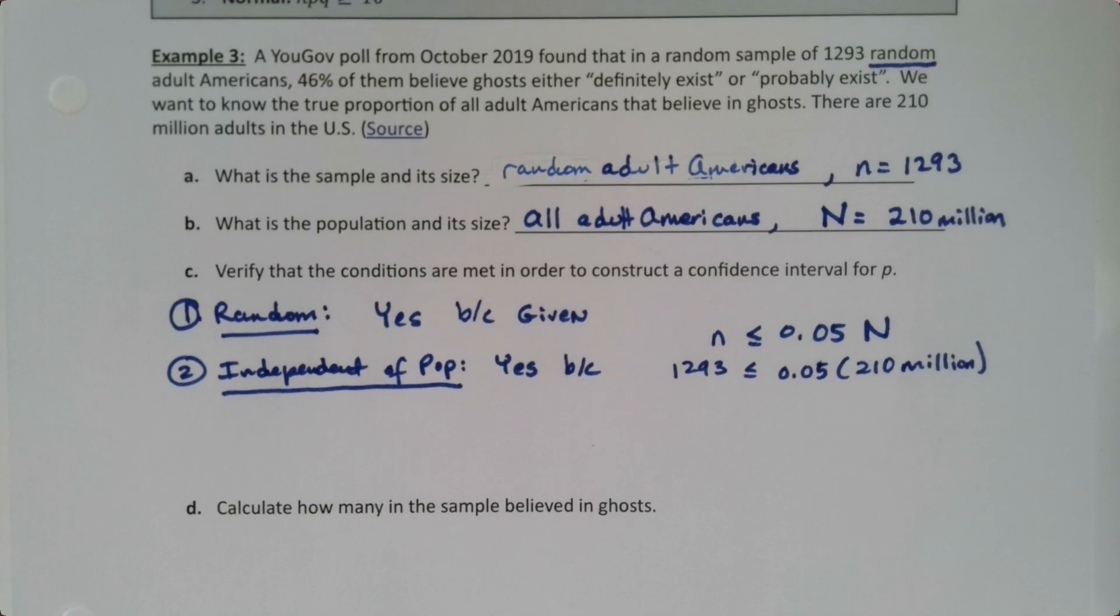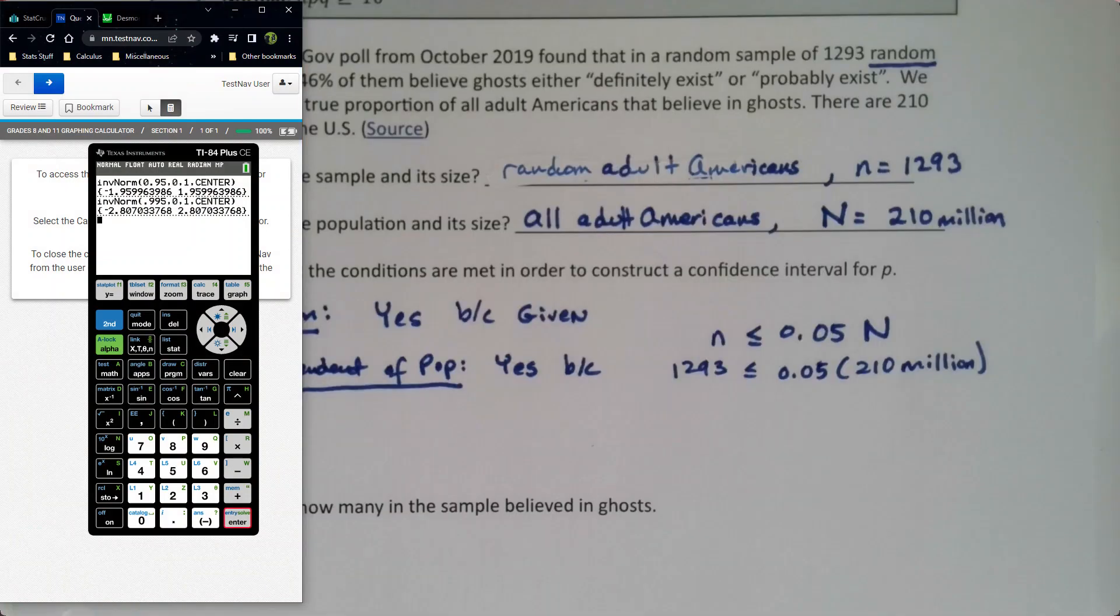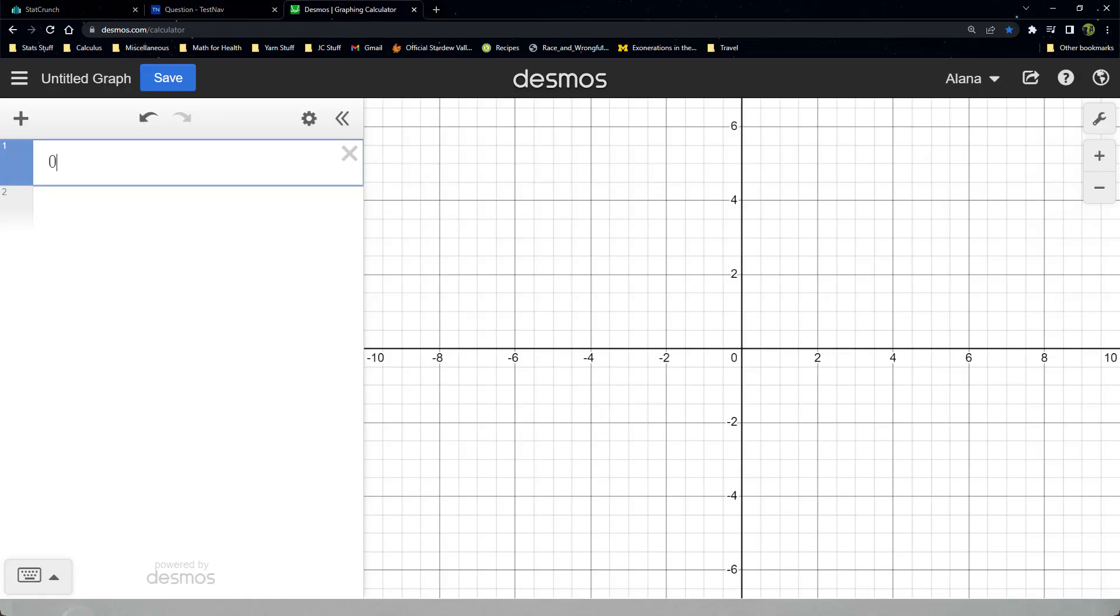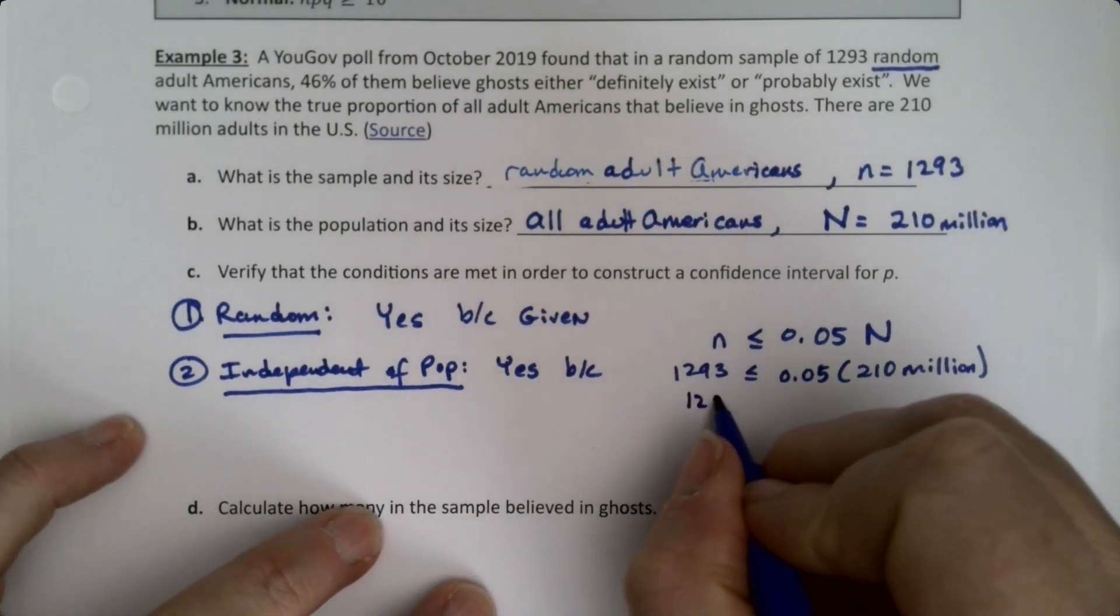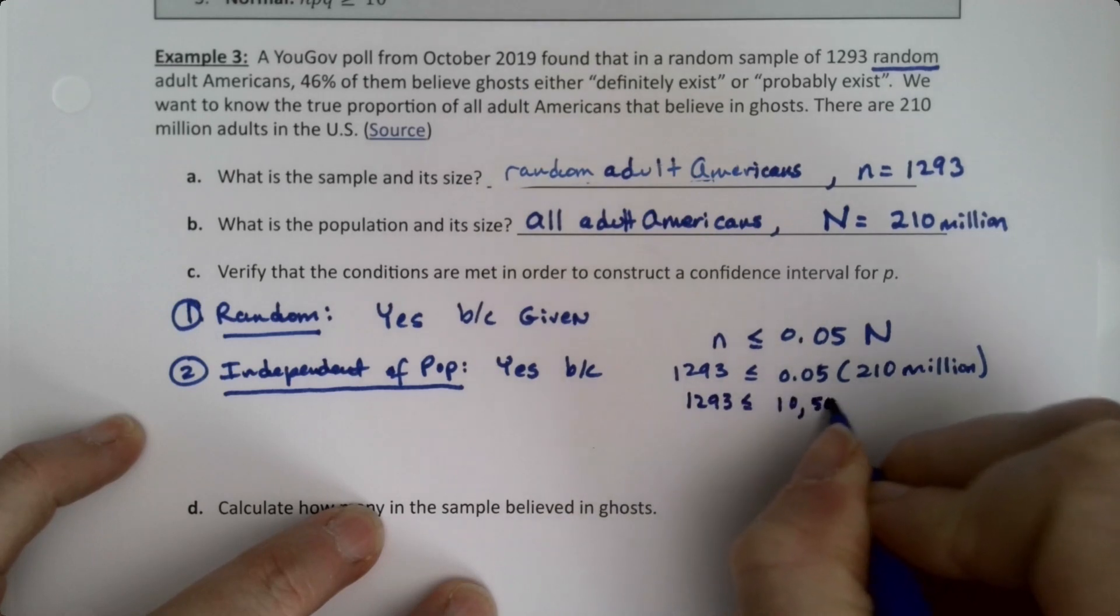And indeed it is. I can prove this. This is kind of an 'of course' moment a lot of times—I don't even make you write this out because we know it's going to be true. But if you want to be precise, we can do this. Let me grab Desmos. 0.05 times 210 million is 10 million five hundred thousand. So yes, 1293 is indeed less than 10 million five hundred thousand.